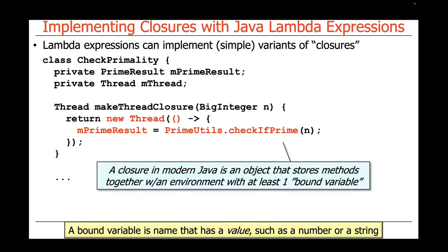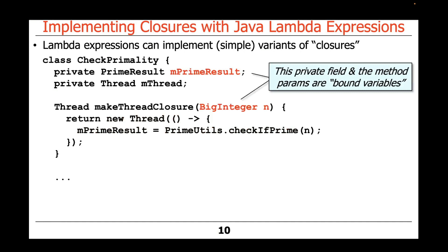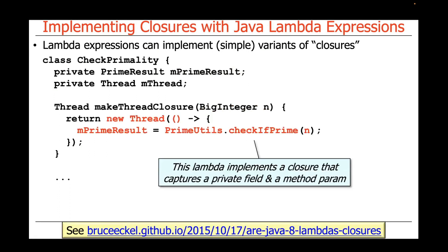In this particular case, a closure in modern Java is an object that stores a method together with an environment that has at least one so-called bound variable. A bound variable is basically a name that has a value, such as a number or a string. In this case study, we have a field called mPrimeResult and also a method parameter, which are the bound variables.